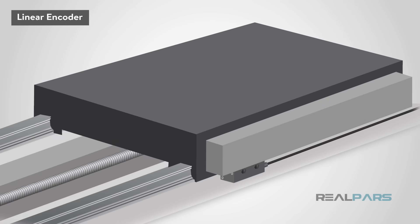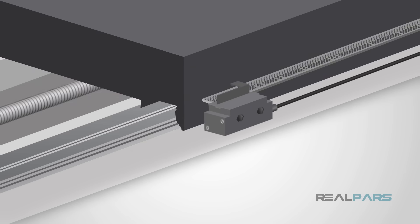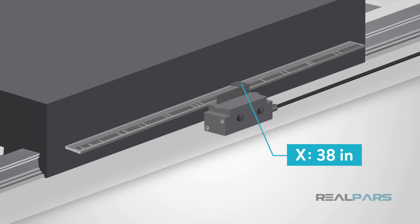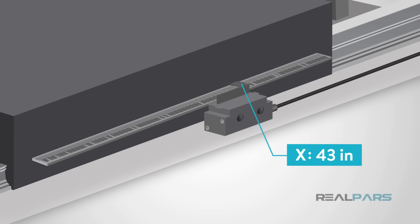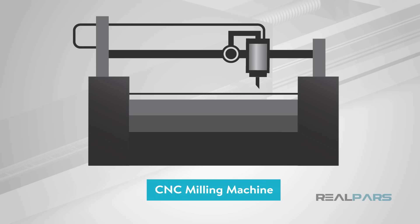The linear encoder uses a transducer to measure the distance between two points. These encoders can use a rod or a cable that is run between the encoder transducer and the object that will be measured for movement. As the object moves, the transducer's data collected from the rod or cable creates an output signal that is linear to the object's movement. As the distance is measured, the linear encoder uses this information to determine the position of the object. An example of where a linear encoder may be used is for a CNC milling machine, where precise movement measurements are required for accuracy in manufacturing.